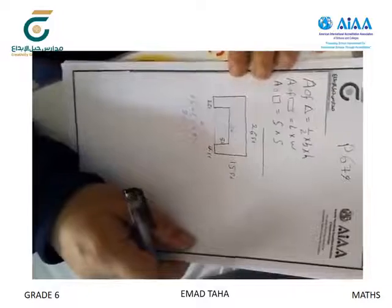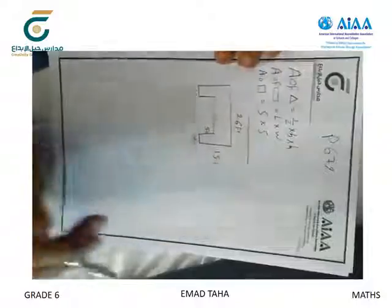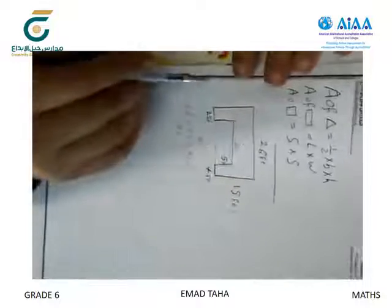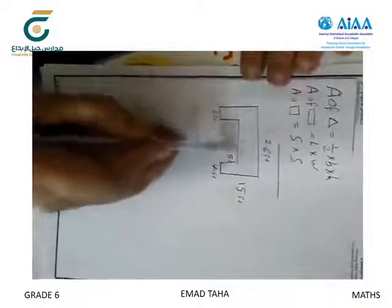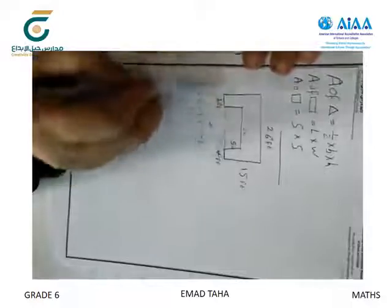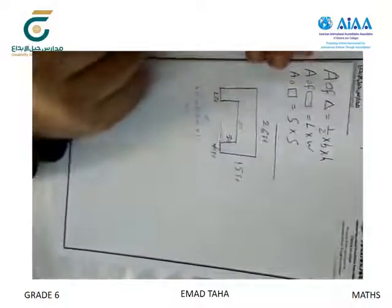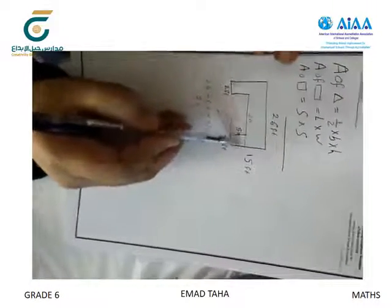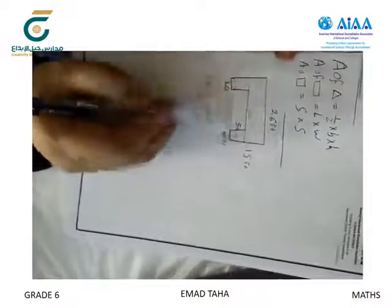How to find the area of the polygon — we have two methods. The first: find the area of the smallest rectangle and subtract it from the total area of the big rectangle. Or, we find the area of this rectangle, and this rectangle, and this rectangle, and add the three rectangles.